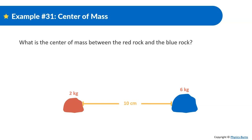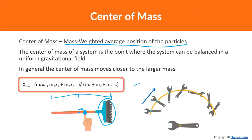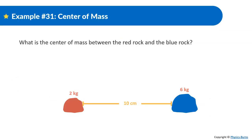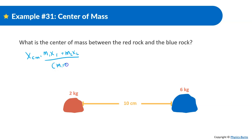Let's do some examples. What is the center of mass between the red rock and the blue rock? Here's the formula: the center of mass equals the mass of object one times its position, plus the mass of object two times its position, all divided by the total mass — m1 plus m2.